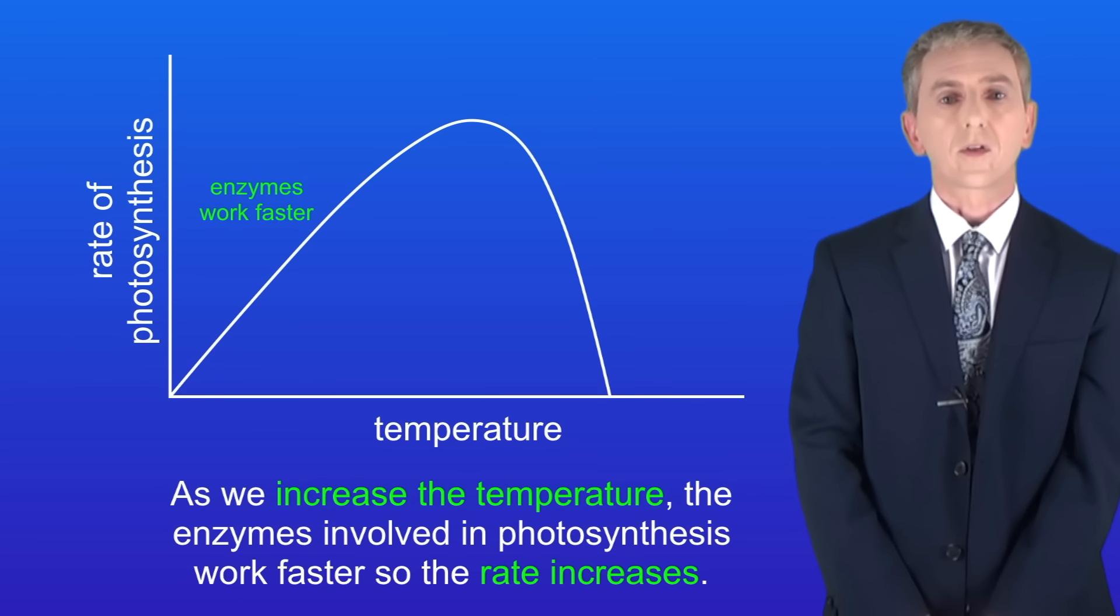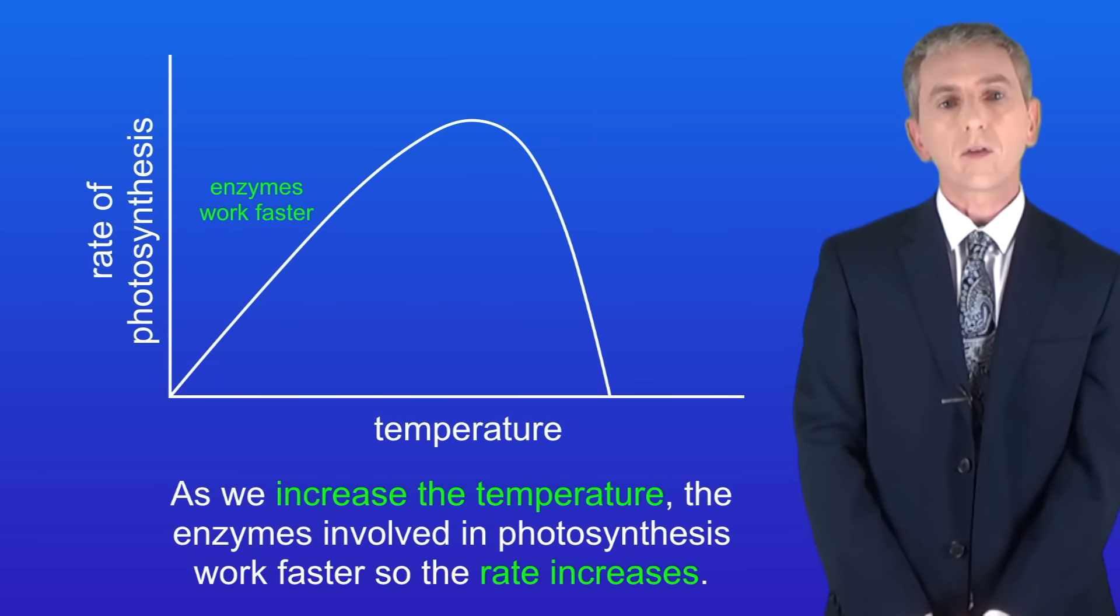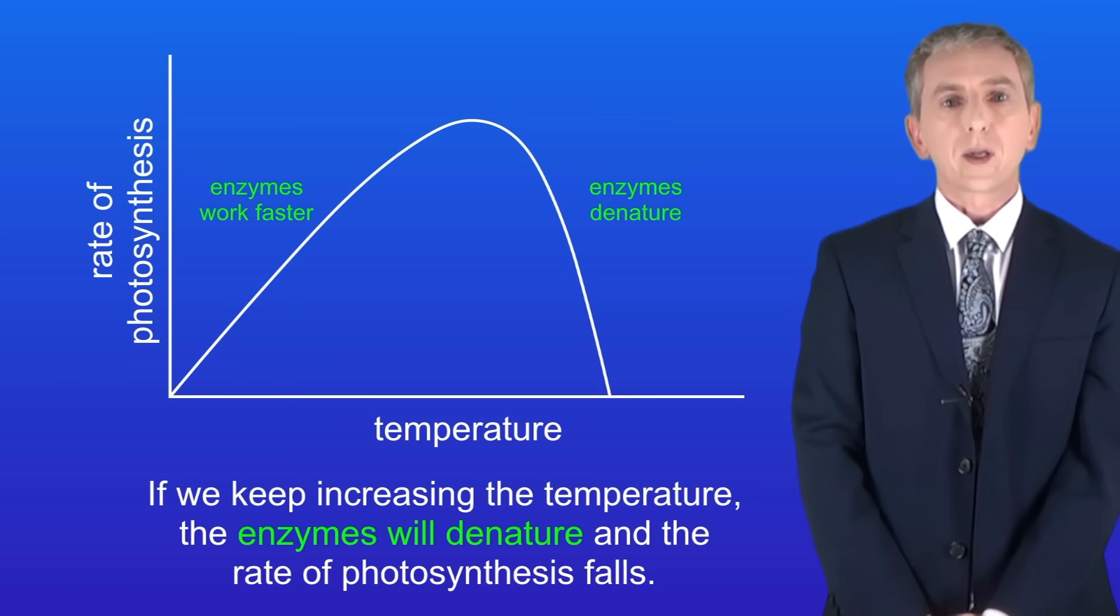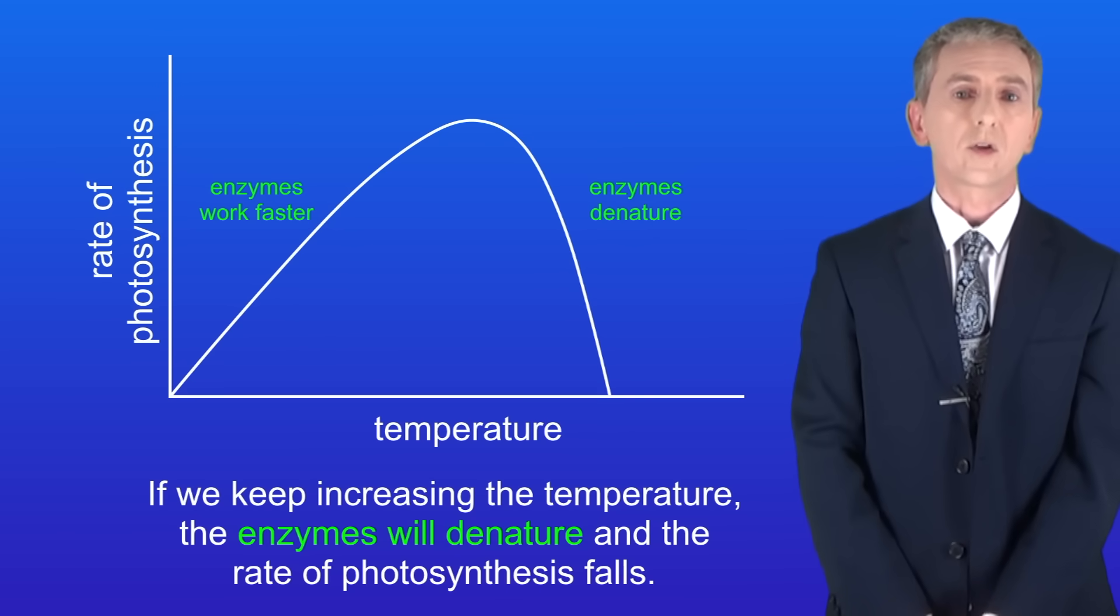Temperature can also affect the rate of photosynthesis. As we increase the temperature, the enzymes involved in photosynthesis work faster so the rate increases. However if we keep increasing the temperature, the enzymes will denature and the rate of photosynthesis falls.